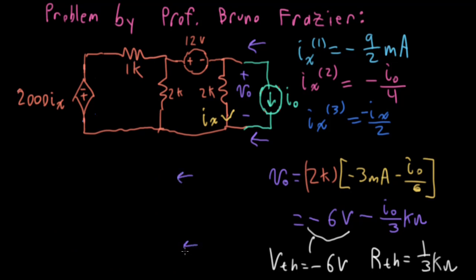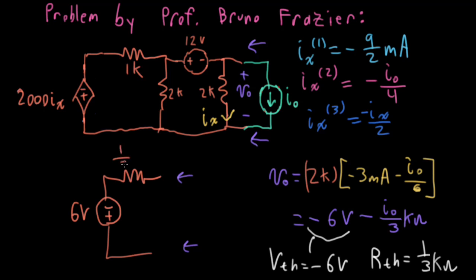So the Thevenin equivalent circuit looking to the left is just a 6-volt source — with a minus sign on top because it was negative — and a one-third kΩ resistor. This is the same result that Professor Fraser found in his notes using the more traditional techniques of finding the open circuit voltage and the short circuit current. I'm not claiming that Marshall's superposition method is necessarily better or easier — it's just another tool in your toolbox.